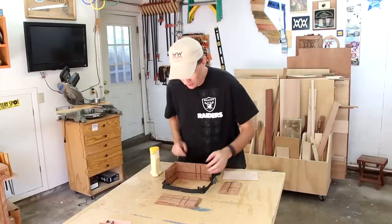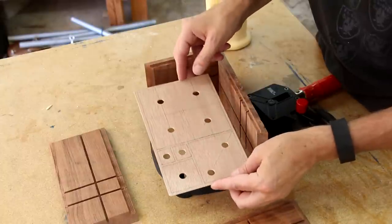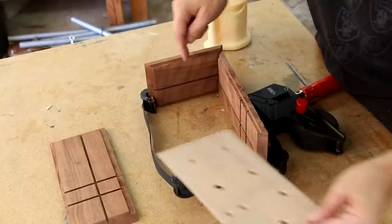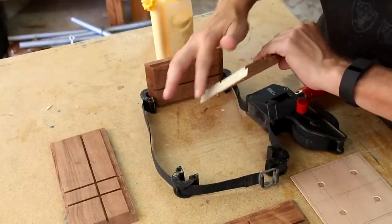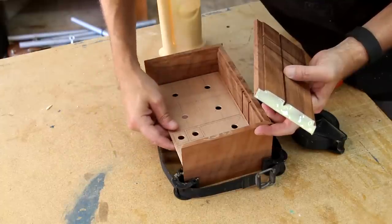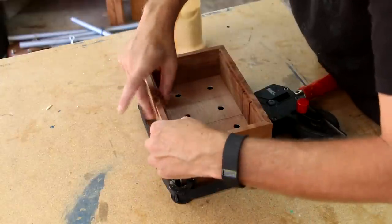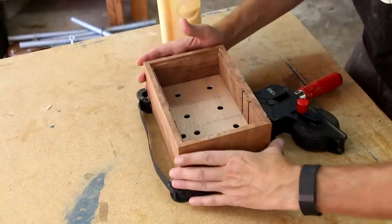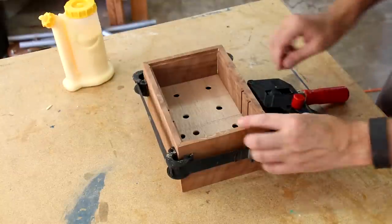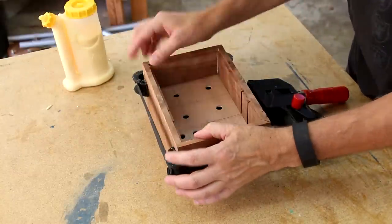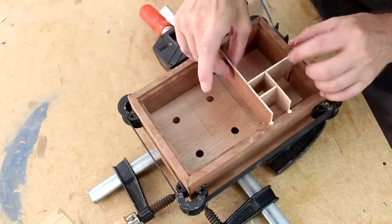Now I can glue the enclosure together. I'm just going to let the center panel for the lights float in the slot. I'm not going to glue it. I'm just going to glue the miters. I'm going to glue this thing in now too.